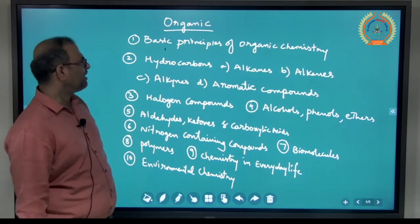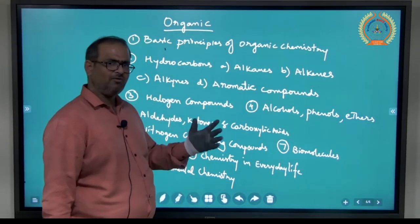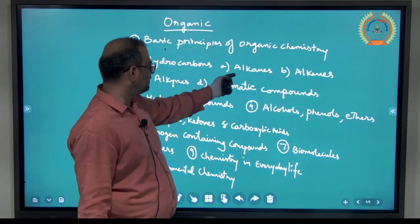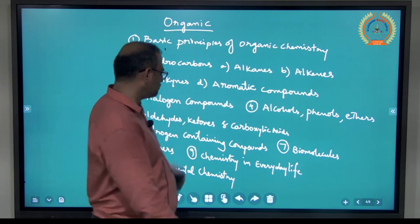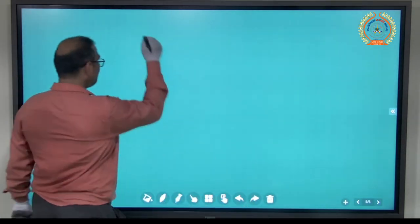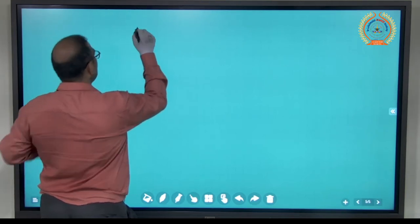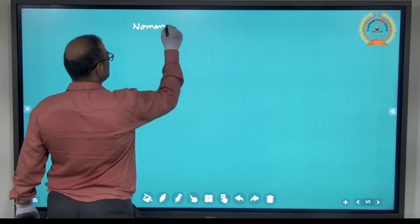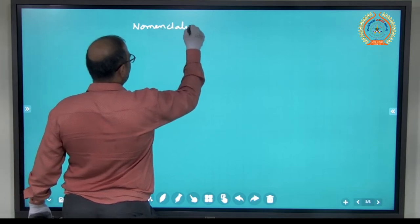If we study first chapter, basic principles, then it will be huge advantage to understand hydrocarbons and then halogen compounds, alcohol, phenol, ether, so on and so forth. How it is useful, you see here. In first chapter, basic principles, I am talking about nomenclature.